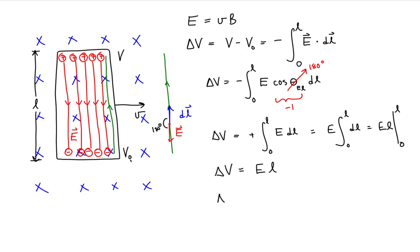Remember, the electric field is the product of the speed at which the conductor is moving and the magnitude of the magnetic field. So this means that the potential difference induced in this conductor moving in this uniform magnetic field is equal to the product of the speed of the conductor, the magnitude of the magnetic field, and the length of the conductor.